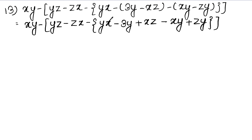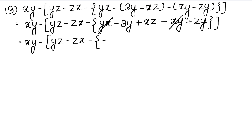We have cancelled the XY and YX terms. There are no other like terms because there is XZ and ZY. So let's write the rest as it is: minus YZ minus ZX minus curly bracket minus 3Y plus XZ plus ZY, with curly bracket closed and bigger bracket closed.